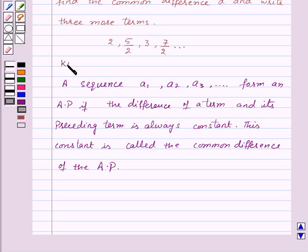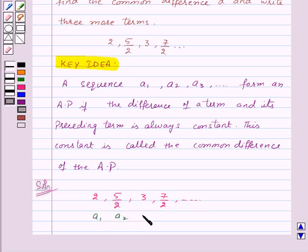This is the key idea for this question. Now, let's see its solution. We are given the sequence 2, 5 by 2, 3, 7 by 2 and so on. So that means here, this is A1, A2, A3 and A4. Now, we need to find out whether this sequence form an AP or not.